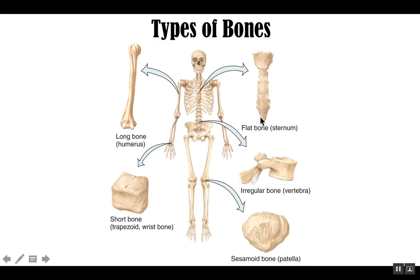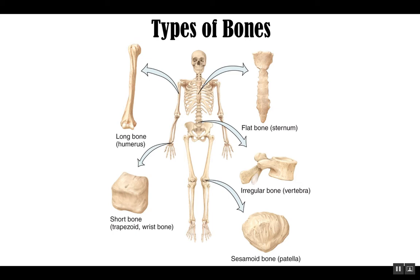Flat bones, like the sternum, protect your heart and other organs of the chest. A lot of the bones of the cranium that form a cavity surrounding your brain are flat bones. Then you have a category called irregular bones, which can't really be placed in any of the other three categories because they have a lot of processes sticking off of them. A vertebra, for example, is very irregularly shaped — it's got a body and some processes that stick off of it.